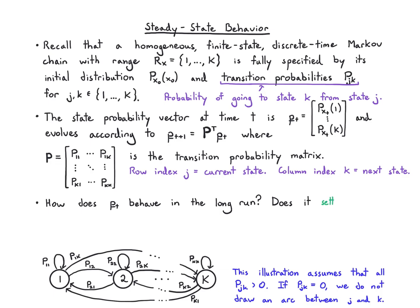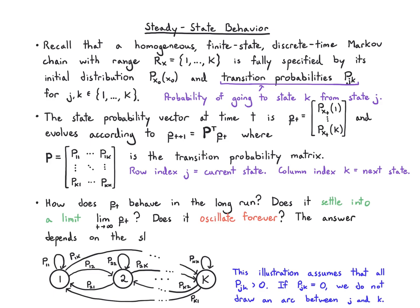What I want to know is what happens to the state vector P_t in the long run. Does it settle into a limit — does it converge? Or could it also oscillate forever? To answer this question, I need to look more carefully at the structure of my Markov chain, which basically just means looking at where the probabilities are zero and non-zero, i.e., where the arcs actually exist.